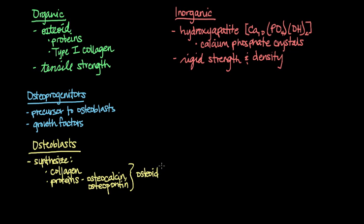Osteoblasts are also responsible for producing alkaline phosphatase, which is the enzyme that forms hydroxyapatite or the mineral portion of bone. Once osteoblasts have synthesized enough collagen, proteins, and alkaline phosphatase to form the organic and inorganic portions of the bony matrix around them,